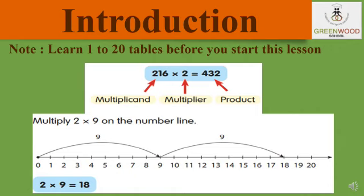First we will start with the introduction. The number that is to be multiplied is called the multiplicand. The number by which the multiplicand is multiplied is called the multiplier. And the result of multiplication is called the product.